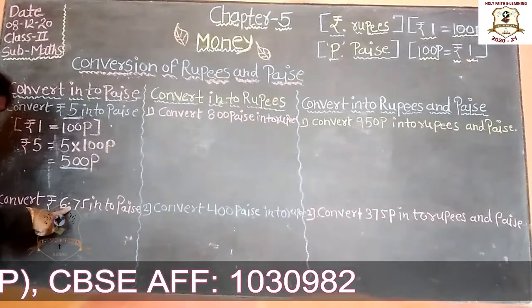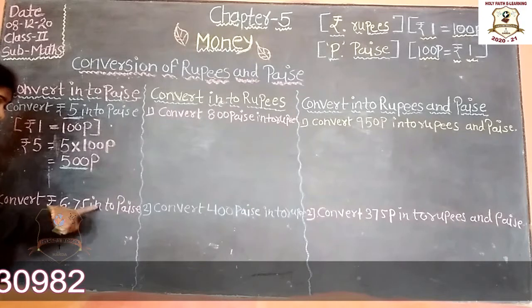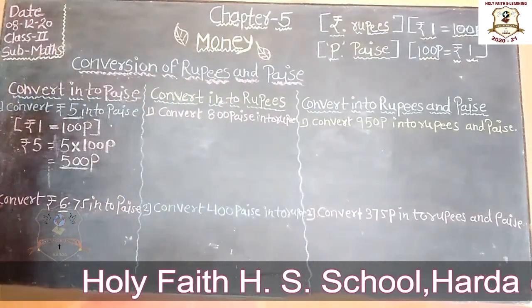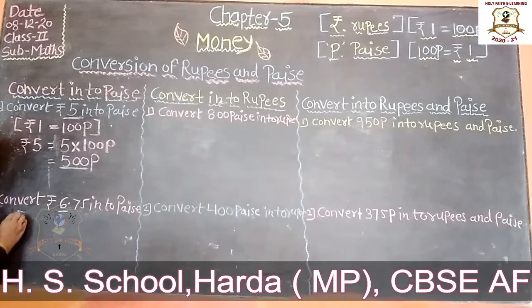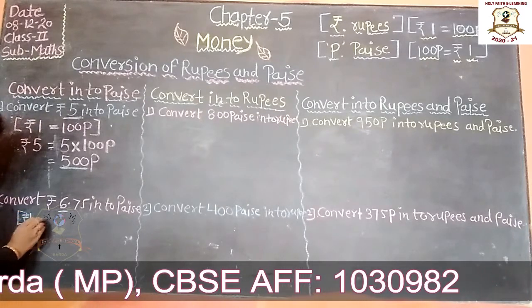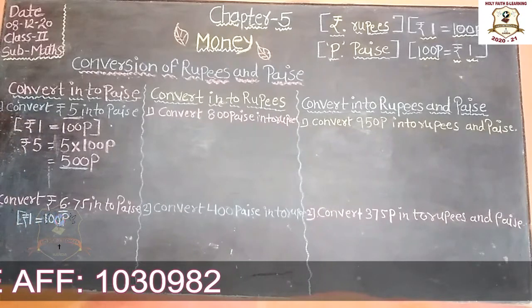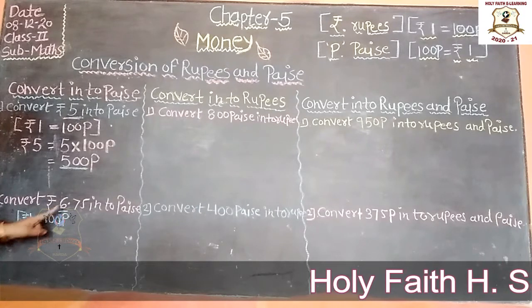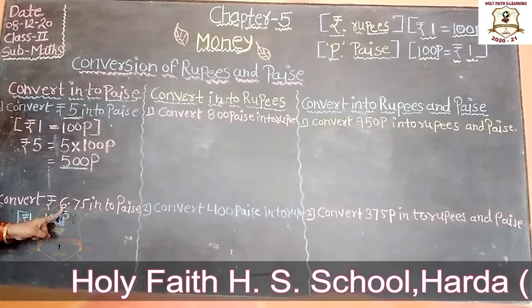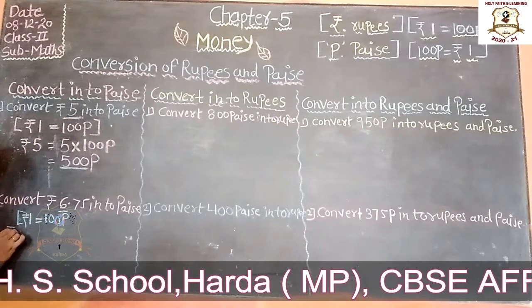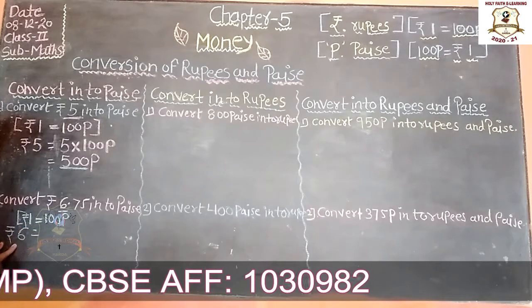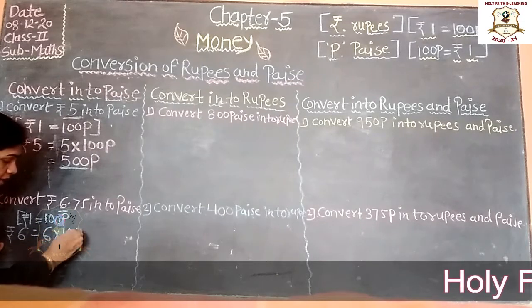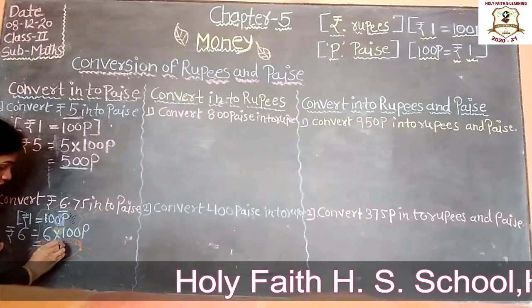So rupees 6.75 — we need to convert this into paise. Rupees 1 is equal to 100 paise. We have rupees 6, so instead of 1 we put 6. Rupees 6 is equal to 6 multiplied by 100 paise, which is equal to 600 paise.